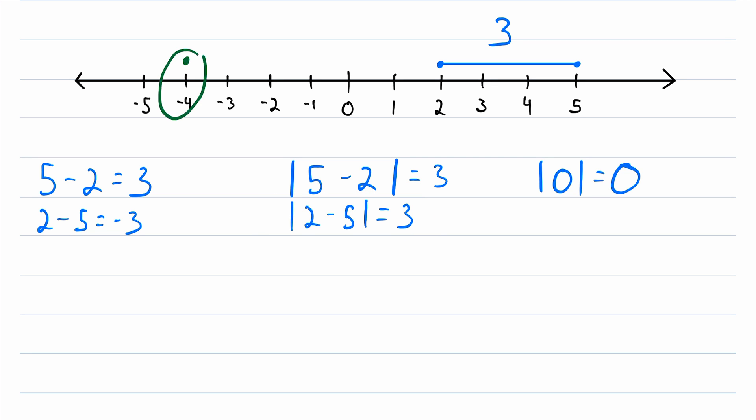If we wanted to find the distance between negative 4 and positive 1, we just take the absolute value of negative 4 minus 1. Negative 4 minus 1 is negative 5, so the absolute value of that is positive 5. And we can see that that is true looking on the number line: 1, 2, 3, 4, 5. Indeed, the distance from negative 4 to positive 1 is 5.